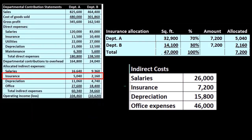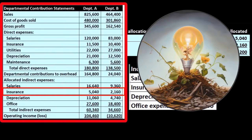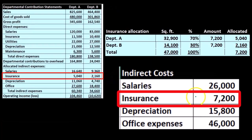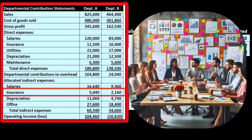Does square footage have anything to do with insurance? Does it appear on the insurance bill? No, it doesn't have to. All we're trying to do is find an appropriate way to take this $7,200 insurance bill and apply it out to the two departments. We can't just divide it by two because the departments are different sizes — that doesn't seem appropriate.